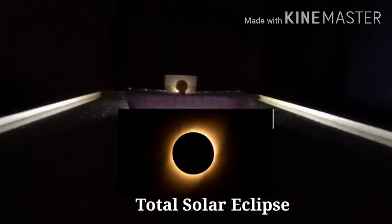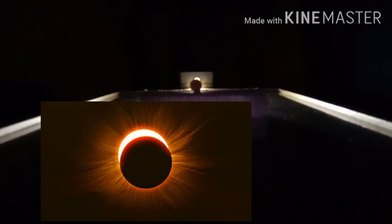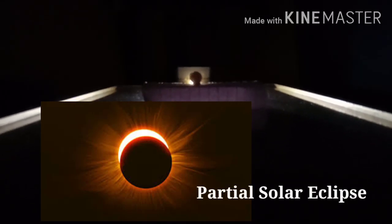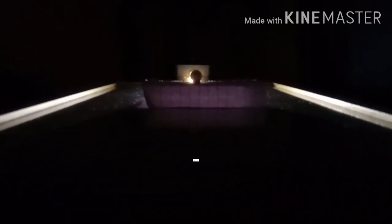However, during the same period, at the places where the shadow is lighter, the Sun's disc appears partially covered. This condition is described as partial solar eclipse. Total solar eclipse is seen in a very limited region of the Earth.